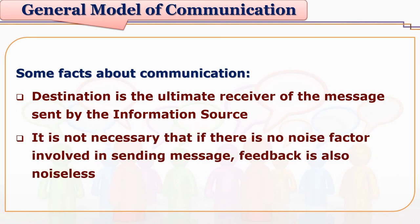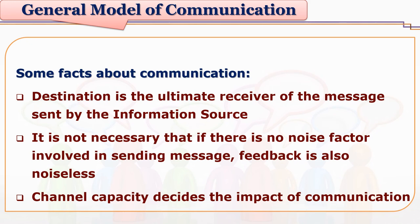It is not necessary that if there is no noise in sending the message, the feedback is also noiseless. Noise can appear either from sender to receiver or in the channel from receiver to sender. The impact of communication many times depends on the channel capacity. If the channel has problems, noise, or limitations, communication gets affected. The classic example is bandwidth — whenever there is a problem with bandwidth, signals are not properly received, videos don't download properly, messages get distorted, and pictures are blurred.